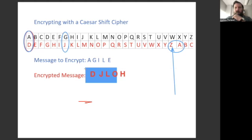So to encrypt the word AGILE with the Caesar cipher, I would have D, J, L, O, H.